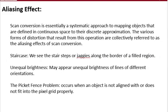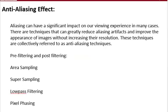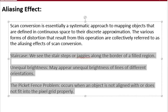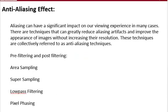Aliasing effect — we have already discussed aliasing in our display section. For the aliasing effect, there are some causes: staircase effect, unequal brightness, and pixel framing problems. These points are for the aliasing effect and this question commonly comes in examinations as short notes, so you have to remember them.